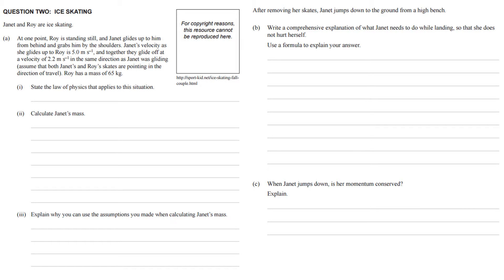One of the first things we have to do when we look at this question is identify what information they've given us. So here they've told us Janet's velocity beforehand is 5 m per second, and they've told us afterwards that the velocity of Roy and Janet equal 2.2 m per second, and they told us that Roy's mass is 65 kgs.